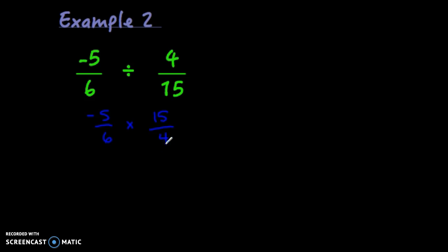And I'm going to look for common factors and reduce everything I can. So 5 and 4 have no common factors other than 1. 15 and 6 can both be divided by 3. So 15 divided by 3 is 5, 6 divided by 3 is 2.